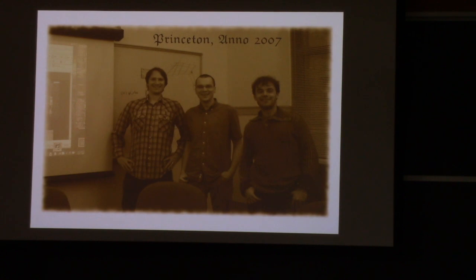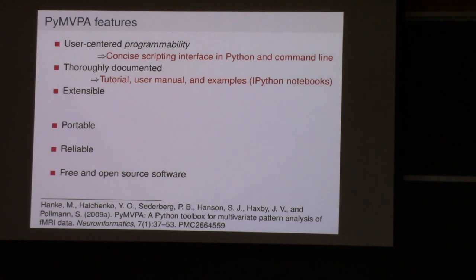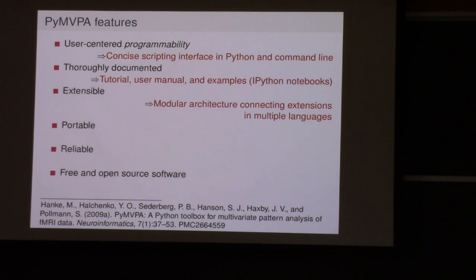At that time with Python 2.2 or 2.3 — prehistoric times — what we wanted was user-centered programmability so we could express analyses really easily. We wanted good documentation; as soon as IPython was released, we had notebooks with examples. We wanted to be extensible — we didn't want to recode all the machine learning libraries, we wanted to reuse and integrate instead of re-implement. We wanted portability — it runs everywhere. It was apparently even used on a robot in the Arctic at some cold-season research lab.